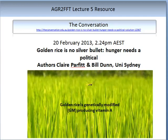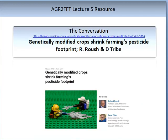Please read the following resource from The Conversation: 'Golden Rice is No Silver Bullet — Hunger Needs a Political Solution,' written by Claire Puffett and Bill Dunn from the University of Sydney. This gives an interesting perspective on the consequences of the Green Revolution. Please read this article, make notes, and insert them into your lecture. Also read the article 'Genetically Modified Crops Shrink Farmers' Pesticide Footprint,' written by Dr. Rausch and Dr. Tribe. This is essential reading for this subject.